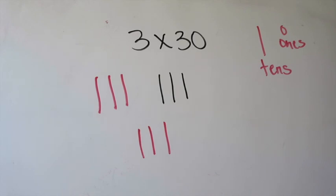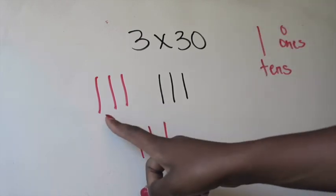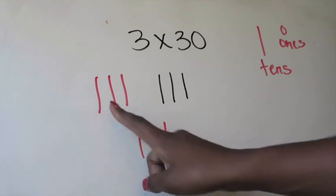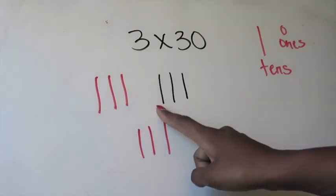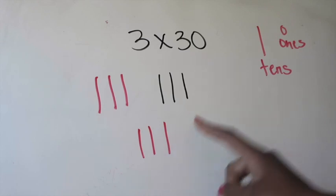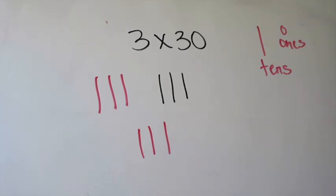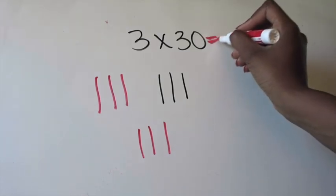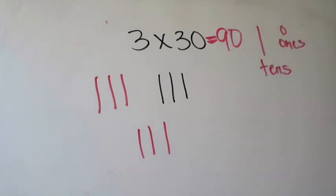Now I have three groups of 30 and I need to use this model to tell myself what the product would be of 3 times 30. Well, I can just count by tens using my model. 10, 20, 30, 40, 50, 60, 70, 80, 90.